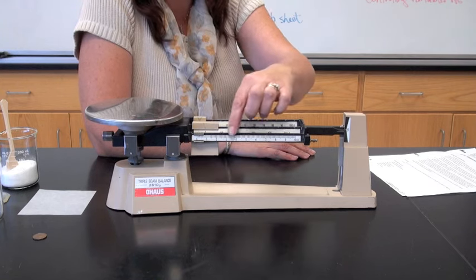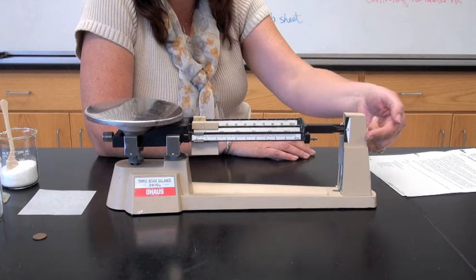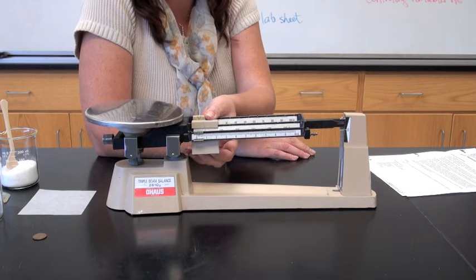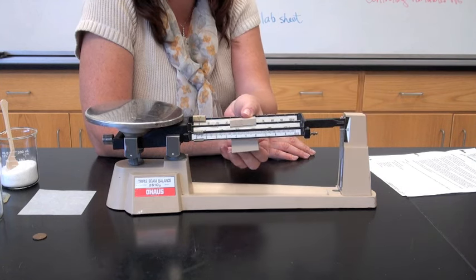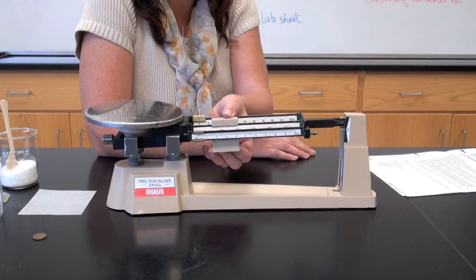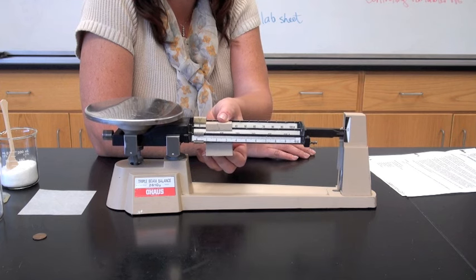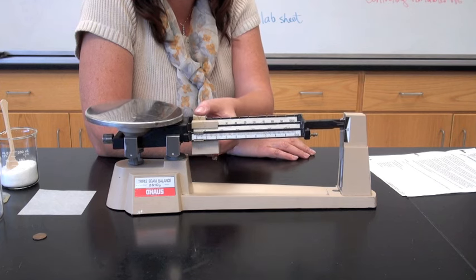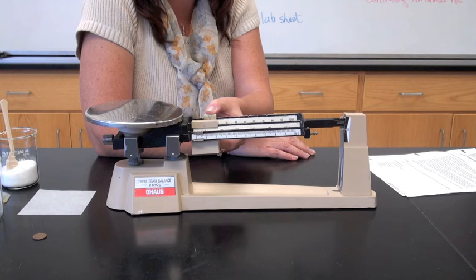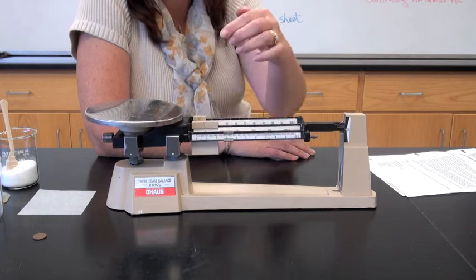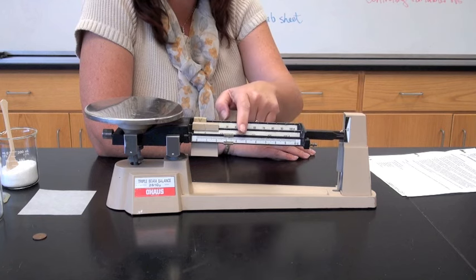The pan, the beam, the zero marker, and the riders. The riders are in different increments. The largest one measures in a hundred grams, the medium-sized one in the back measures in increments of ten grams, and the smallest one in the front measures in increments of a tenth of a gram.